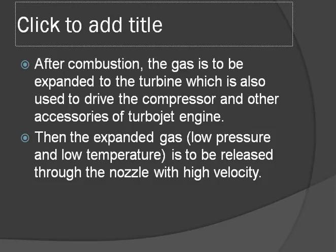After combustion, the gas is expanded through the turbine, which is used to drive the compressor and other accessories of the turbojet engine. The expanded gases are then released through the nozzle at high velocity.